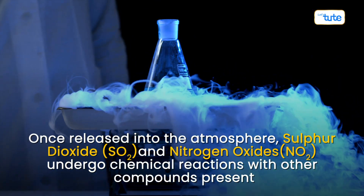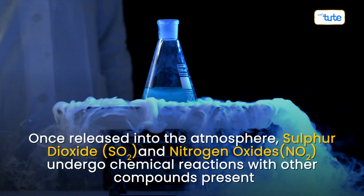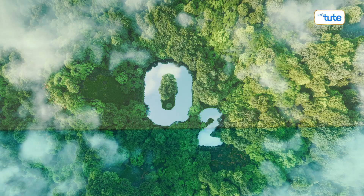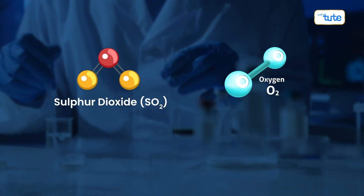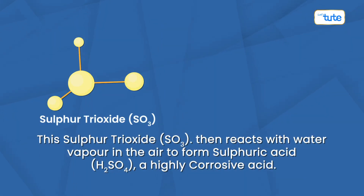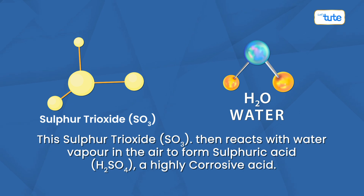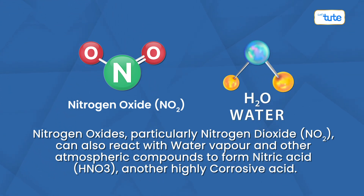Once released into the atmosphere, sulfur dioxide and nitrogen oxides undergo chemical reactions with other compounds present, such as water vapor, oxygen, and other pollutants. Sulfur dioxide reacts with oxygen and other chemicals in the presence of sunlight to form sulfur trioxide. This sulfur trioxide then reacts with water vapor in the air to form sulfuric acid, a highly corrosive acid. Nitrogen oxides can also react with water vapor and other atmospheric compounds to form nitric acid.